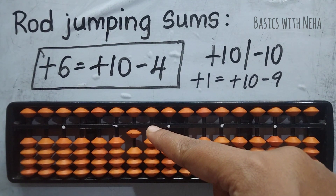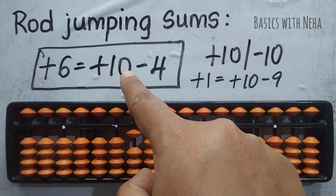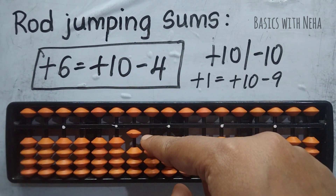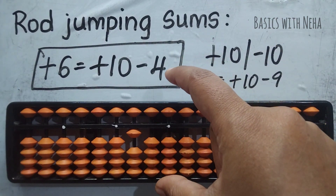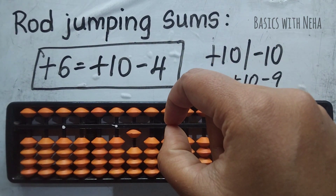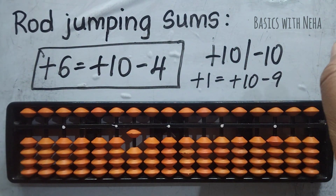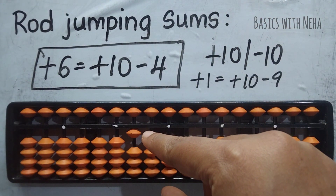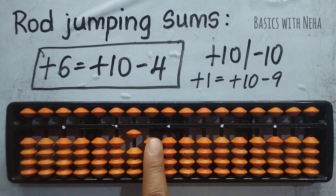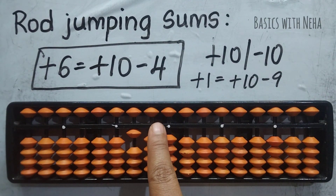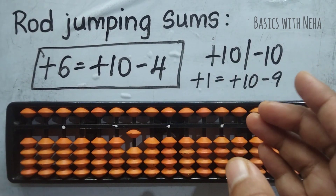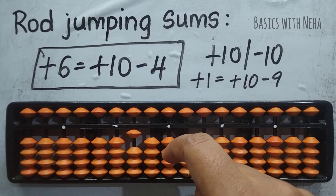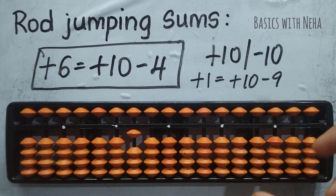It is vice versa: when you have to use the opposite sign — minus 10 plus 4 — you have to add everything in the jumped rod. When there is nothing, you are going to add everything. When there is everything, you are going to remove everything from the jumped rod. You should remember what rod you have jumped. This situation can come for 1 rod, 2 rods, 3 rods, 4 rods, any number of rods. The number of rods you jump, you either add everything or minus everything in the jumped rod. Very simple.